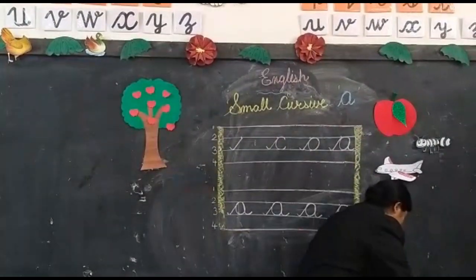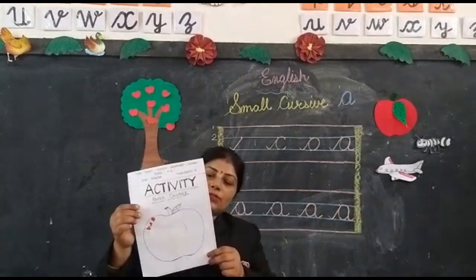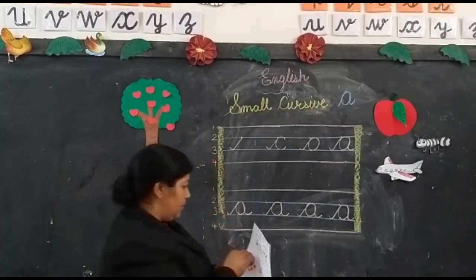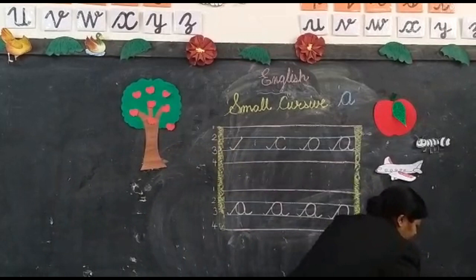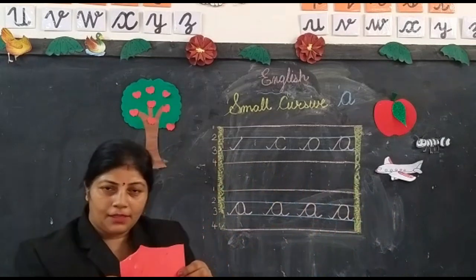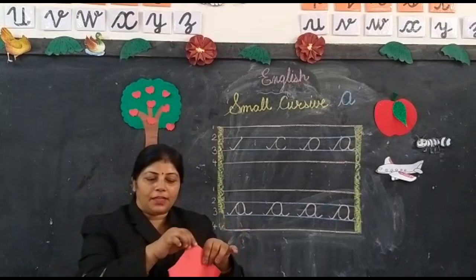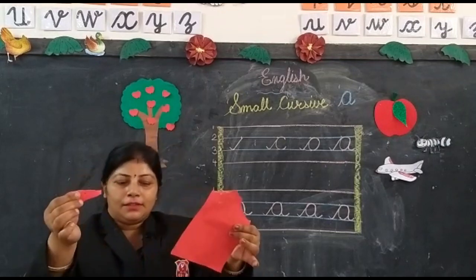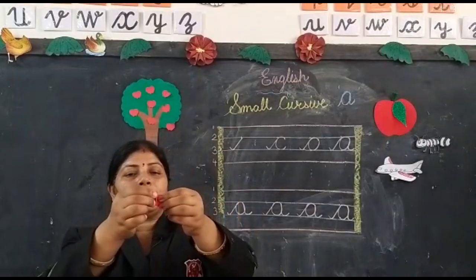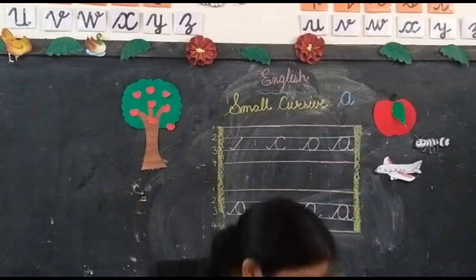Now in next worksheet, this is paper collage. This is paper collage worksheet. What is this? This is an apple. And what you have to do in this worksheet? You have to, first you take this paper. If you don't have any paper, you take white paper, color it and then after what you do? You tear this paper like this and also you tear it in small, small pieces like this.